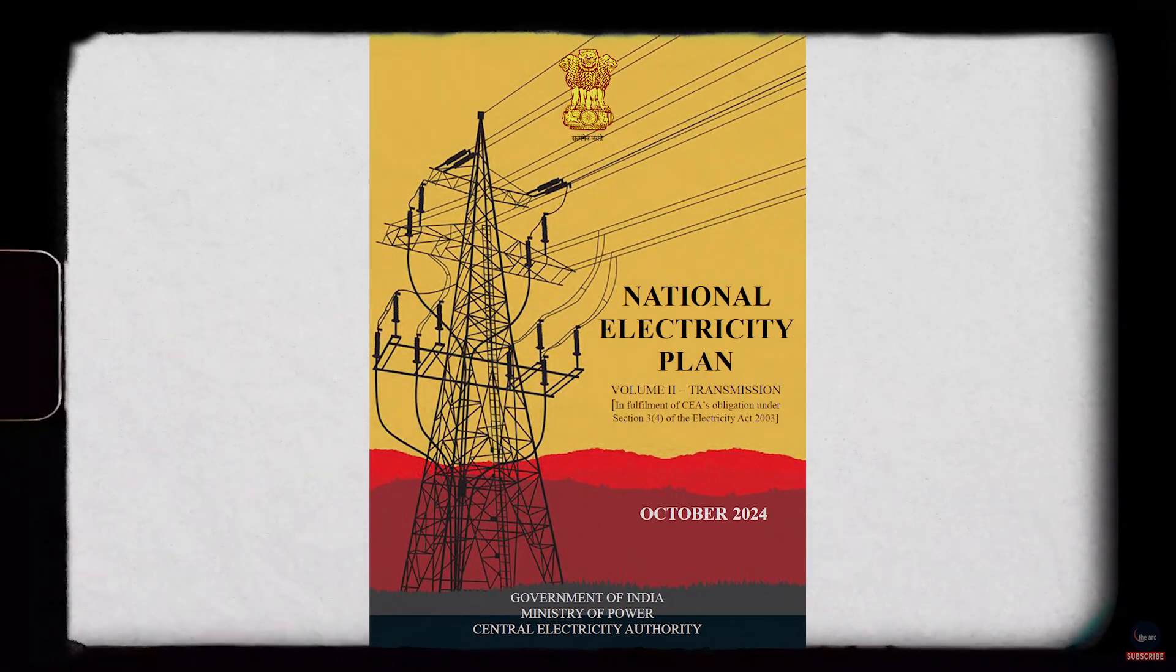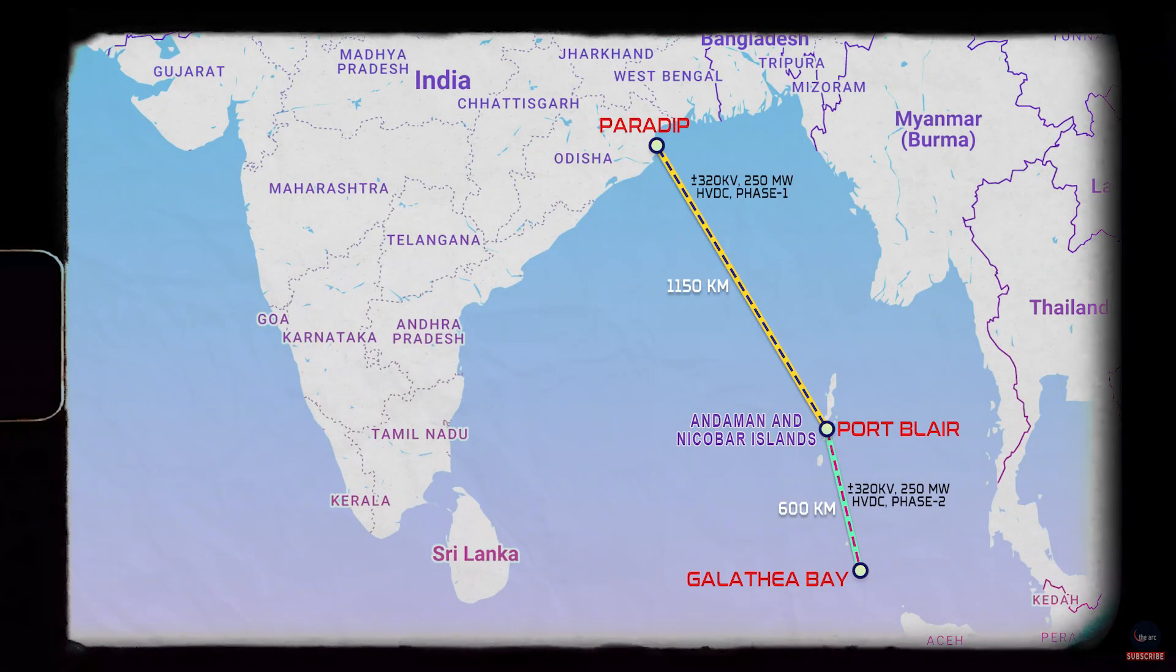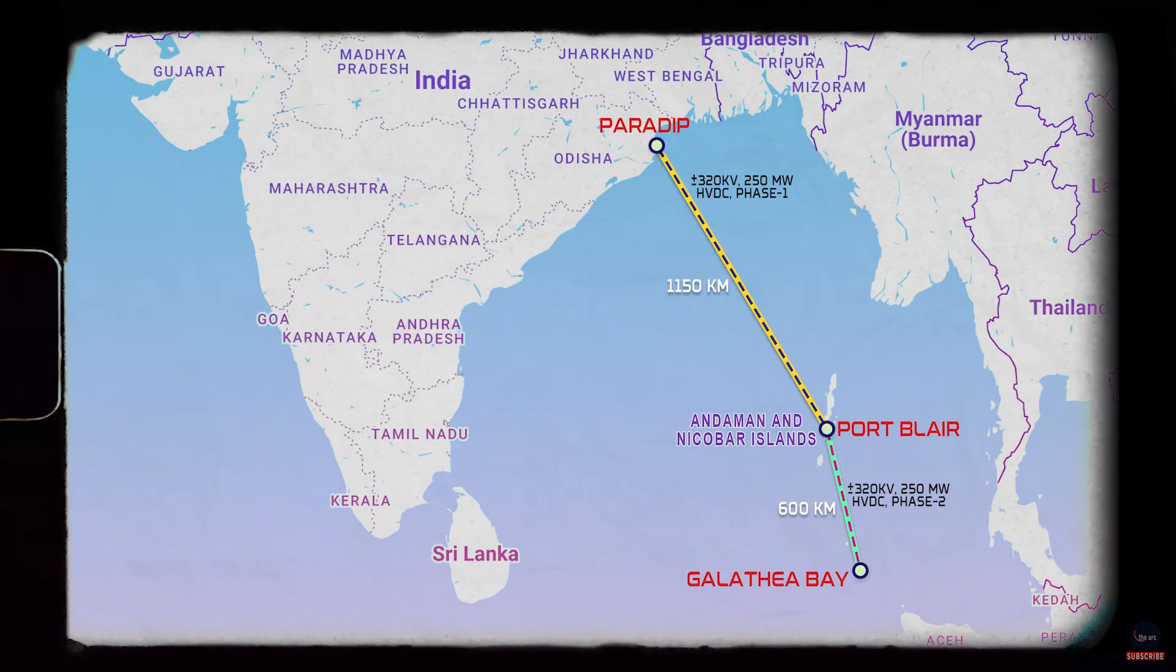In the recently published National Electricity Plan by the Central Electricity Authority, it mentions a unique project proposal: a 1,150 km undersea power cable linking Paradip in Odisha to Port Blair in the Andaman and Nicobar Islands.